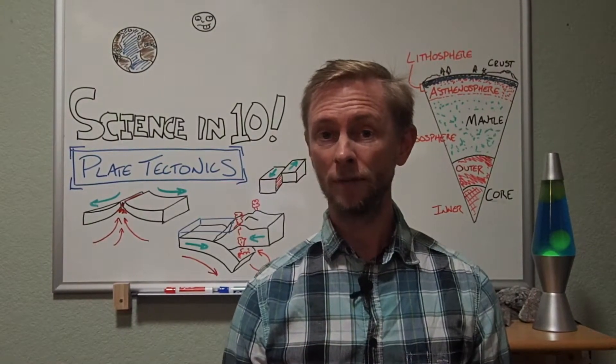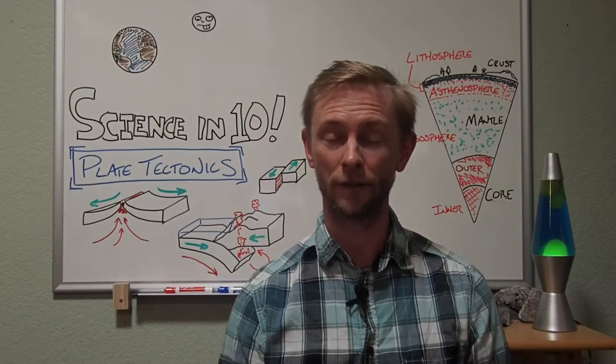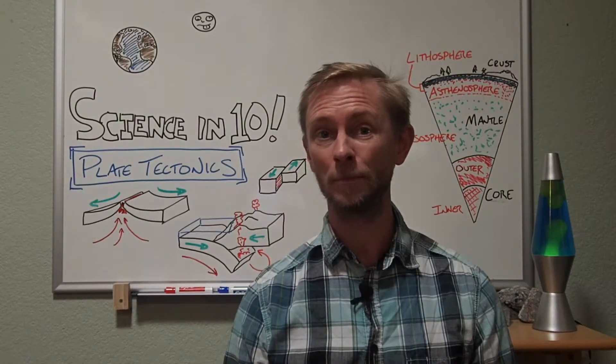And then on top of the asthenosphere, we have the lithosphere, the sphere of rock. The outermost anywhere from 50 to 100 kilometers of the Earth. The lithosphere is solid and when it tries to deform, it breaks.